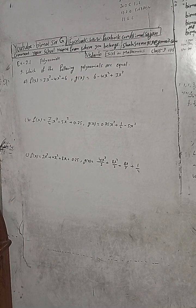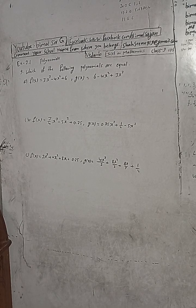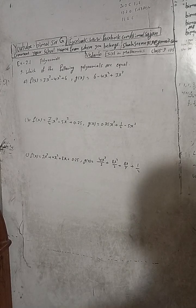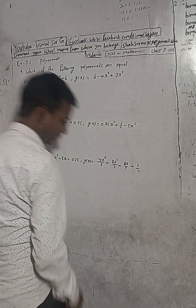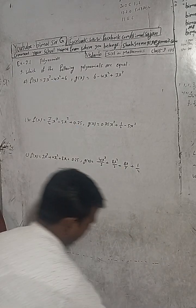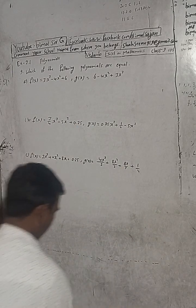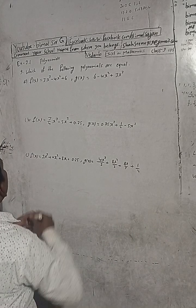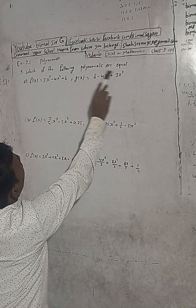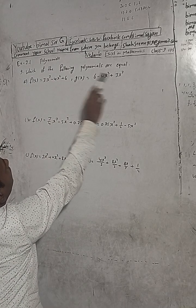Hi Class 9 and 10 students, welcome back to the Be My Search YouTube channel. This is question number 9, Exercise 2.1, the polynomial chapter from Vedanta Excel in Optional Mathematics Class 9. Exercise 2.2 is all completed. Question 9: which of the following polynomials are equal?